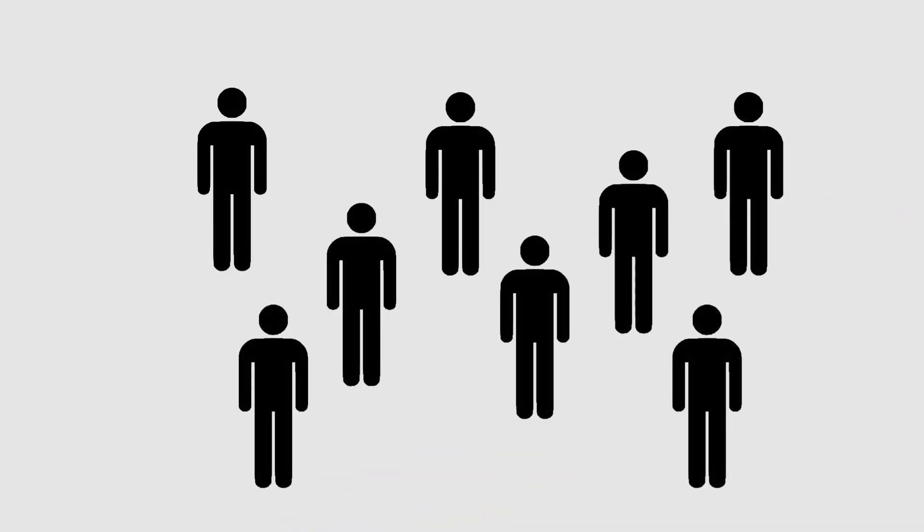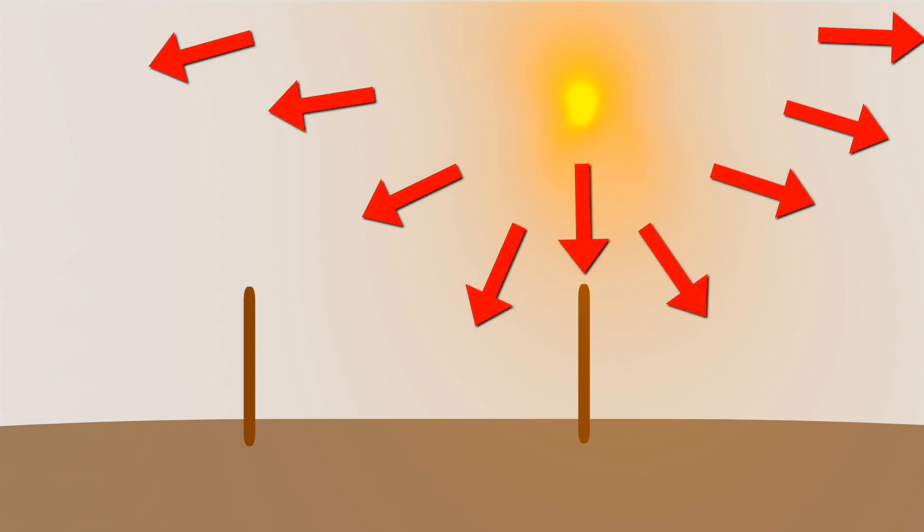However, flat-Earth believers at the time objected to his conclusions. They argued that his calculations were based on the assumption that the sun was far from the Earth and that its rays should be parallel. But what if the sun were actually small and very close to the Earth, positioned directly above Aswan at that moment? In that case, its rays would strike Alexandria at an angle, naturally creating a shadow.